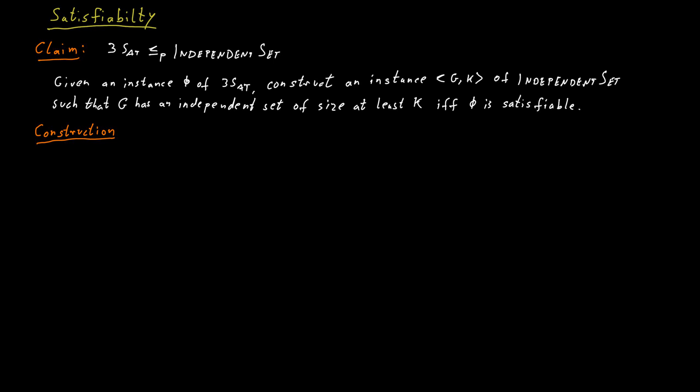So in 3-SAT, one crucial part are the variables. Variables can be true or false. And in independent set, we also make a choice. We make a choice to include a vertex in our independent set or not. Therefore, we should consider having vertices play the role of the literals in the formula. So this is what we are going to do.